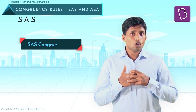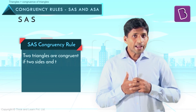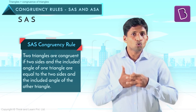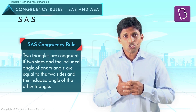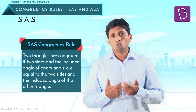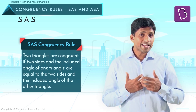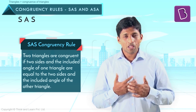So what is the SAS rule for congruency? Two triangles are congruent if two sides and the included angle of one triangle are equal to two sides and the included angle of the other triangle.